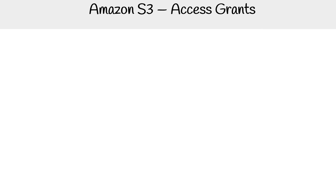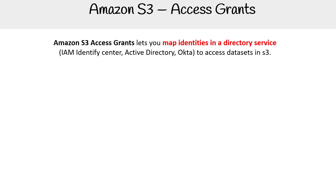Let us quickly cover access grants. S3 access grants lets you map identities in a directory service — think IAM Identity Center, Active Directory, Okta — to access data in S3. This is really useful if people just want easy access and they're already using some kind of directory service.